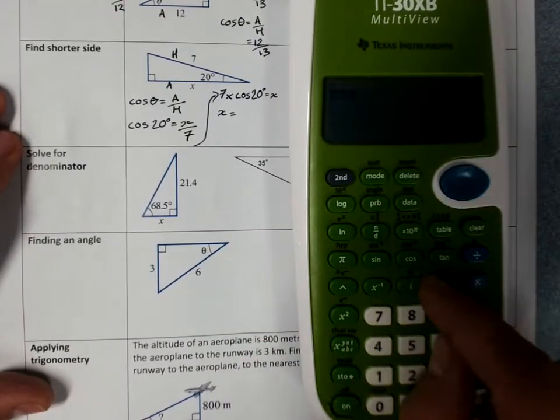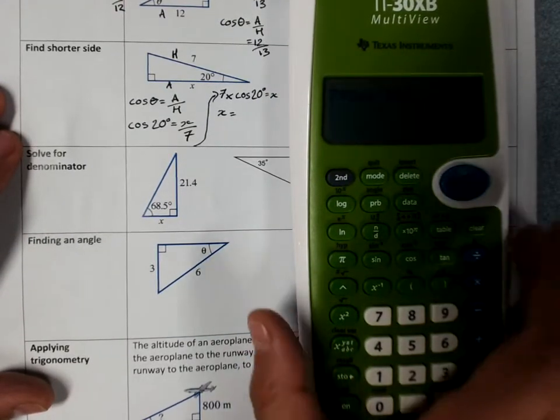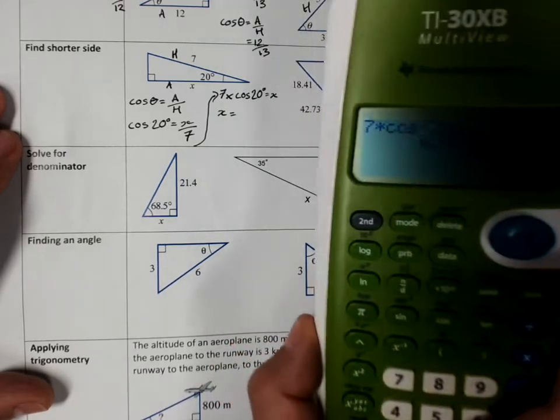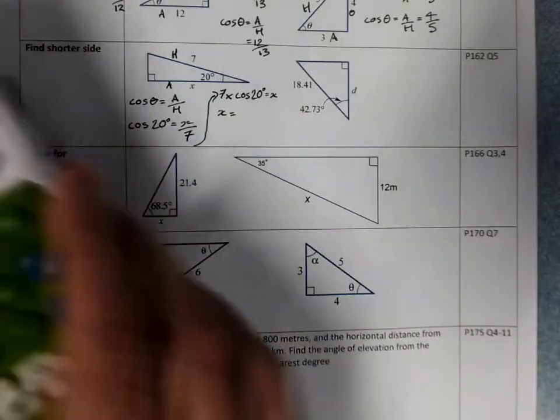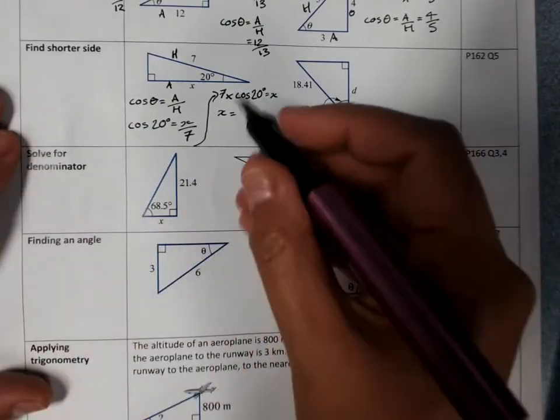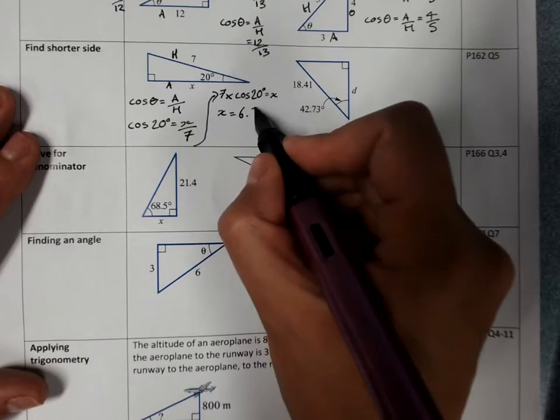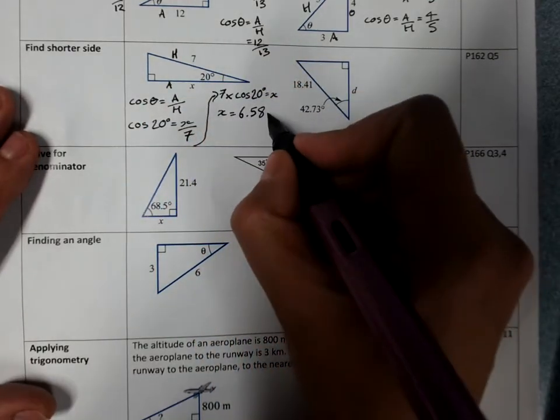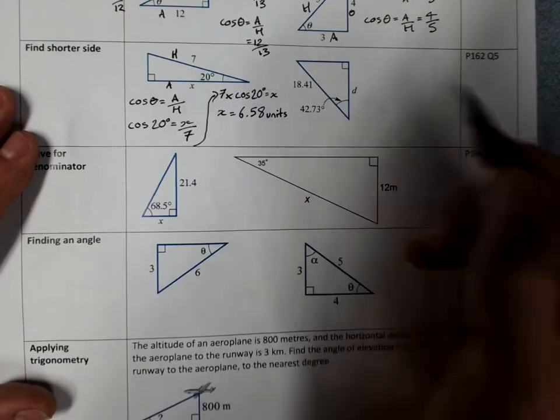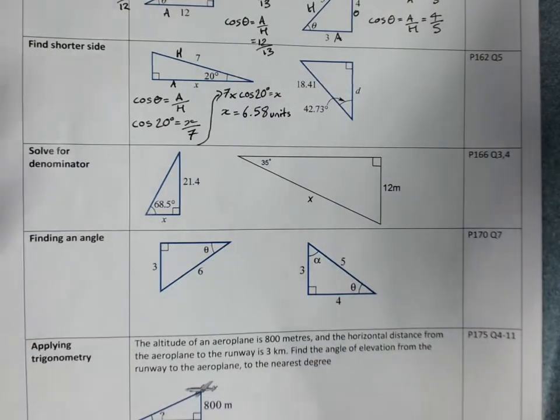7 times cos 20, 6.5778. We'll go to two decimal places. And we'd use units, but they haven't told us what those are. So we'll just write units. Four lines of working.